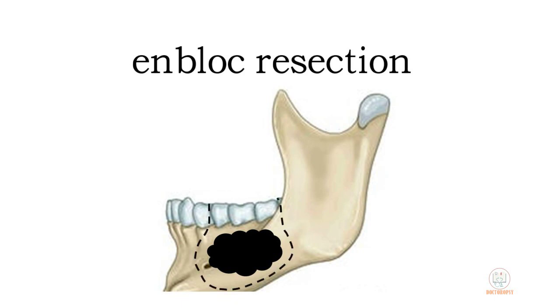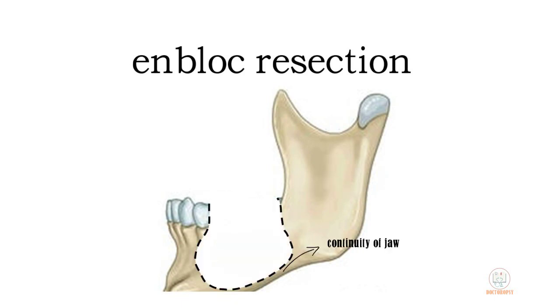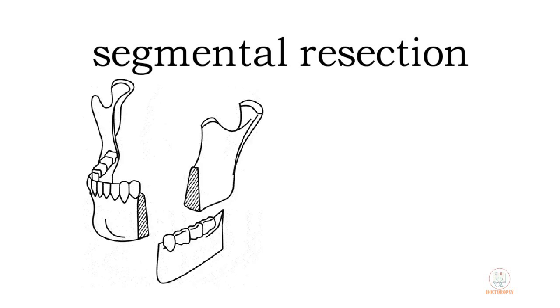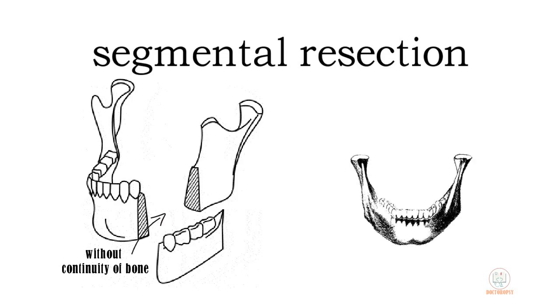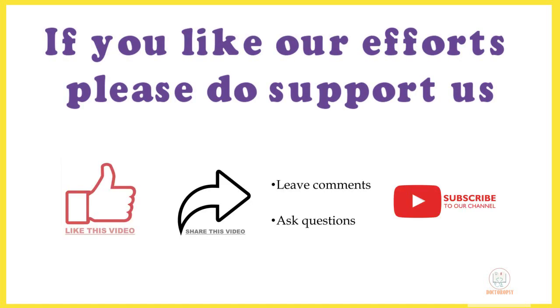En-block resection is done by removing a rim of uninvolved bone while maintaining the continuity of the jaw. About 1 to 2 centimeter margin beyond the radiographic limit of the lesion is considered the minimum margin of resection. Segmental resection is also common — removal of a segment of maxilla or mandible without maintaining bony continuity — and can extend up to hemimaxillectomy or hemimandibulectomy if the lesion is very large. This treatment protocol has the least chance of recurrence.